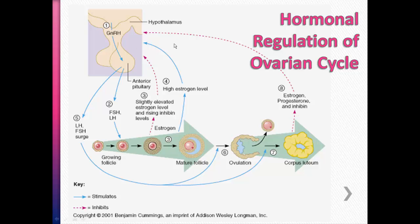Progesterone levels from the corpus luteum are high enough to inhibit GnRH, meaning no more follicle development — because we're anticipating pregnancy. By secreting progesterone, estrogen, and inhibin and inhibiting GnRH, as long as the corpus luteum is intact, there's no more follicle development. If there's no pregnancy, the corpus luteum degenerates into the corpus albicans. The corpus albicans doesn't make progesterone or estrogen, so there's no more inhibition of GnRH, and we start the cycle all over again.